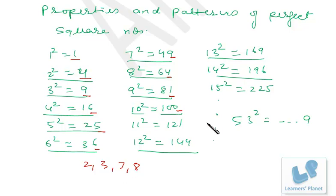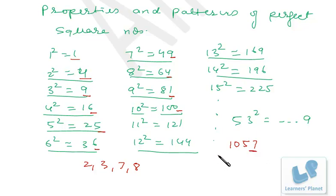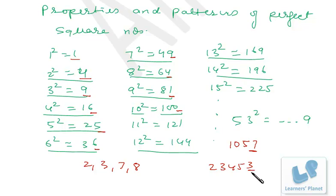For example, the number 1057 — without any calculation you can say it is not a perfect square because it ends in 7, and no perfect square ends in 7. Similarly, 23453 ends in 3, so it cannot be a perfect square either. You don't need prime factorization; you can immediately identify these using this property.